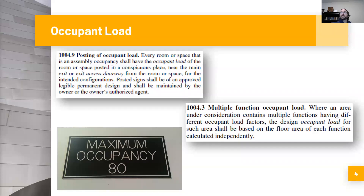There are a few code sections that talk about the requirement to post occupant load. As you can see here, specific to an assembly occupancy, you have to post these signs in a conspicuous place where everybody can see it. Where you have multiple functions of occupant load — meaning different occupant load factors in different uses in the same building — you have to calculate each one independently.